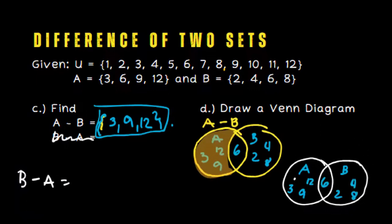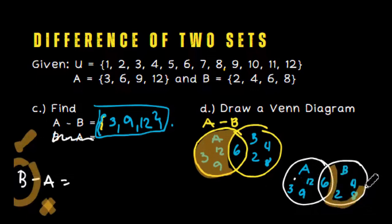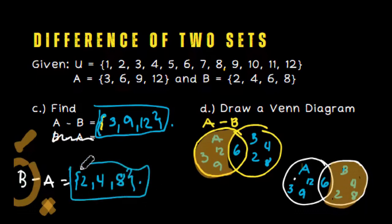Let's visualize this one. We include B but not A. So we'll shade B: all the elements of B that are not in the elements of set A. Of course, 6 is not included because it's part of A. The elements are 2, 4, and 8.